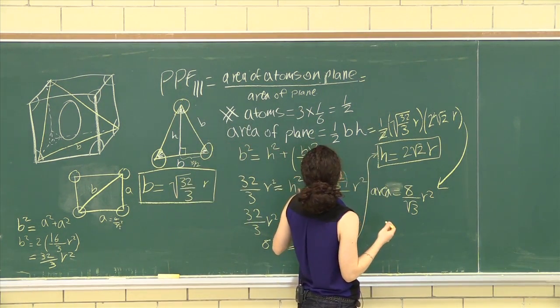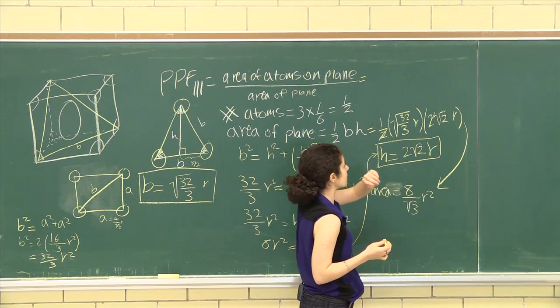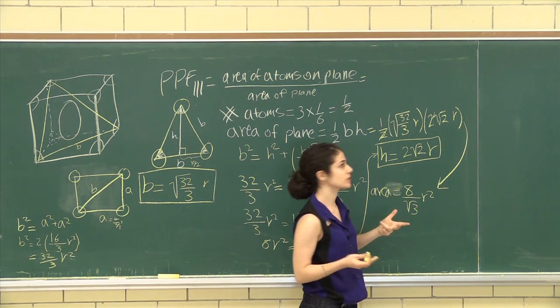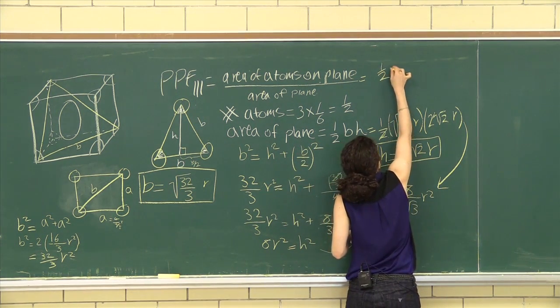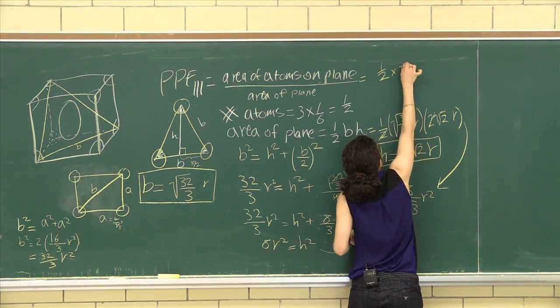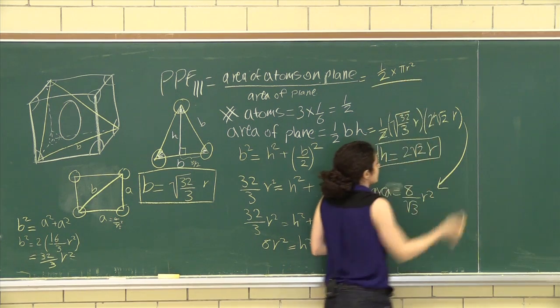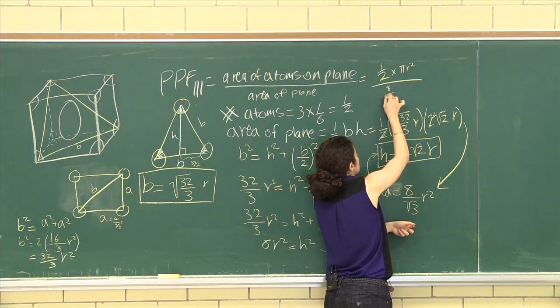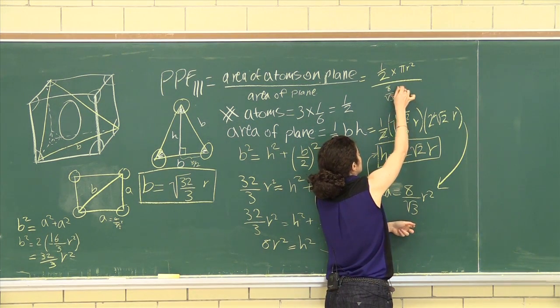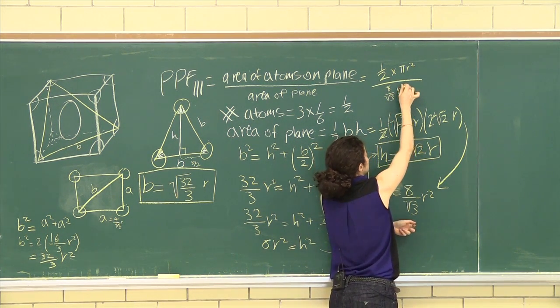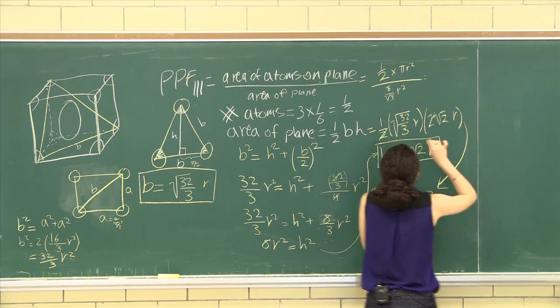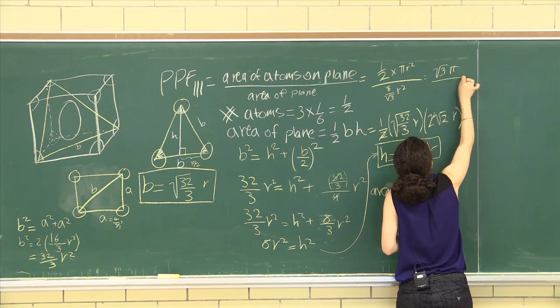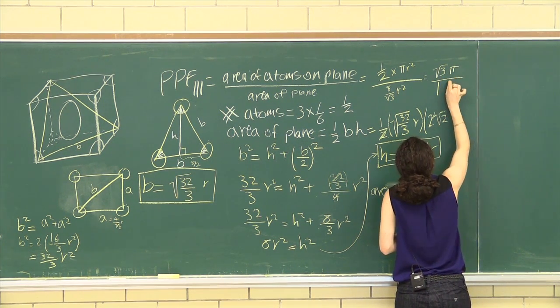Now we're going to put it into our planar packing factor equation. So the area of the atoms on the plane, we have half of an atom times the area of an atom, which is pi R squared. So half times pi R squared, all over the area of the plane, 8 over root 3, R squared. So for that, we get root 3 pi all over 16.